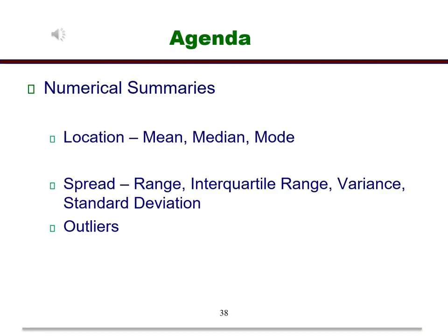In terms of the agenda, we will go over numerical summaries. We will discuss measures of location such as mean, median, and mode. We will then discuss measures of spread such as range, interquartile range, variance, and standard deviation. Finally, we will discuss how to detect outliers.